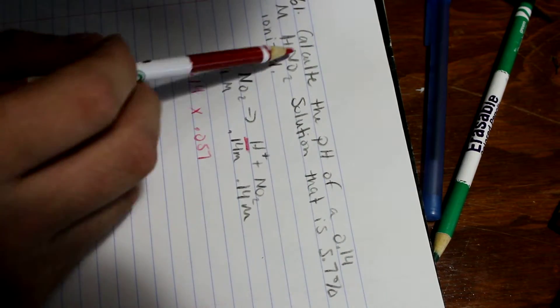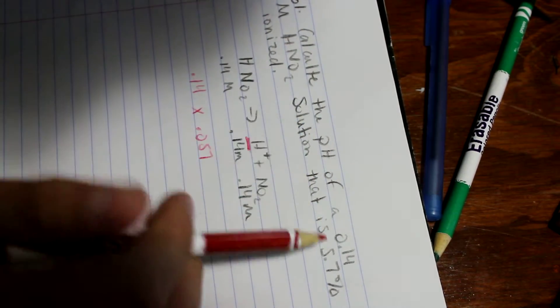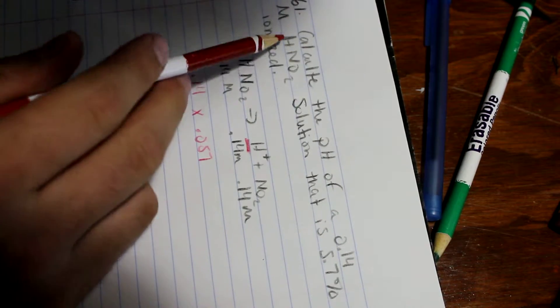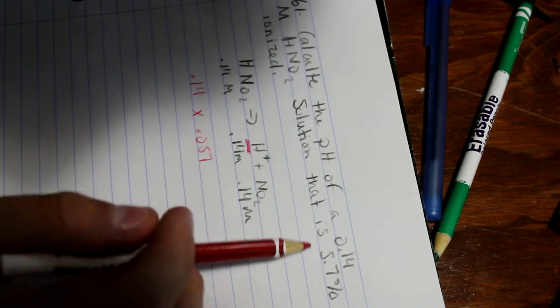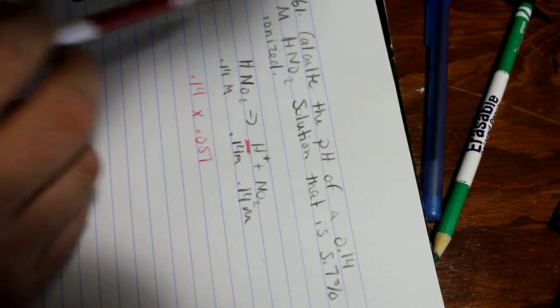Question 61 states, calculate the pH of a 0.14M HNO2 solution that is 5.7% ionized.